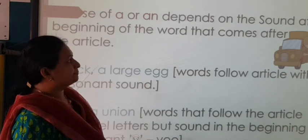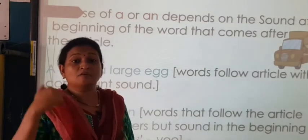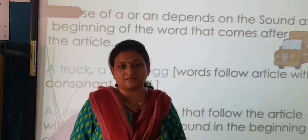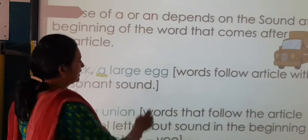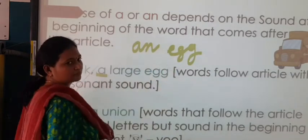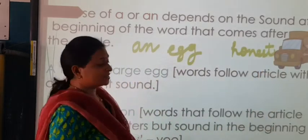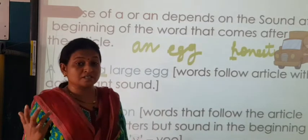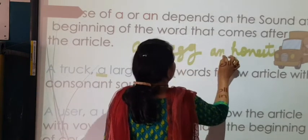The use of 'a' or 'an' depends on the sound at the beginning of the word that comes after the article. Don't blindly follow that a, e, i, o, u — you have to go by the sound of these five vowel letters. If the vowel sound is there, then only you will be writing 'an'. For example: 'a truck', 'a large egg' — but if it is just 'egg', then you would write 'an egg'. For example, 'honest' — the first letter is H, which is not a vowel, but the sound of 'honest' is 'O' because H is silent. So we will write 'an honest man'.